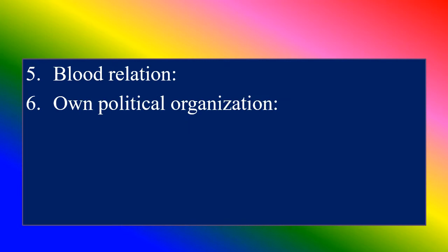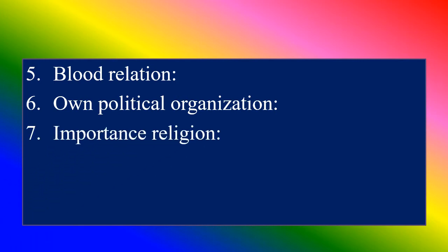Sixth: own political organization — people of the tribe govern themselves. Seventh: importance of religion — they believe in supernatural power. Eighth: common name — every tribal society or group has a unique name, for example the Kornes.